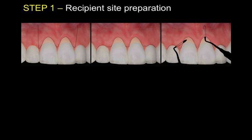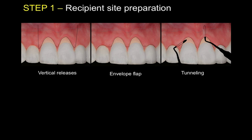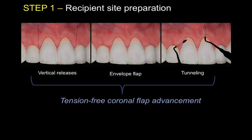In regards to flap design, there are different options. They all have advantages and disadvantages, but basically we're looking at flap designs that include vertical releasing incisions — my least favorite — as well as an envelope flap and a tunneling approach. They all have their own indications, advantages, disadvantages, and different levels of complexity. In theory, the flap design should be split thickness, but in reality it's not always the case, especially for the tunneling approach. What we're trying to achieve by reflecting and mobilizing a flap is the ability to coronally reposition it and cover the connective tissue graft with the least tension possible. Do your best to release the flap as much as possible.